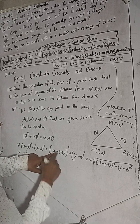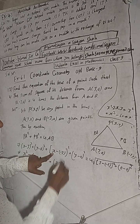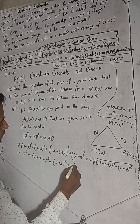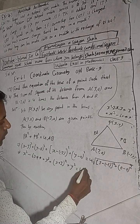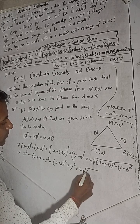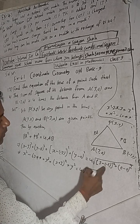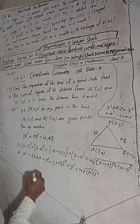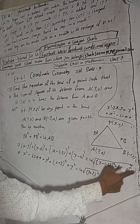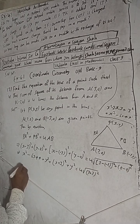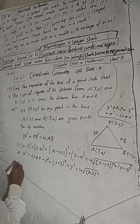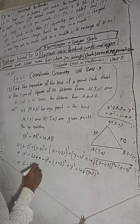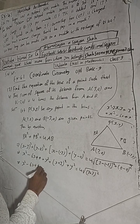And PB² uses (x+3)² + y². So we have x² - 6x + 9 + y² on the left side for PA². The right side involves 4 times AB = 4 times 6 = 24. So: x² - 6x + 9 + y²...